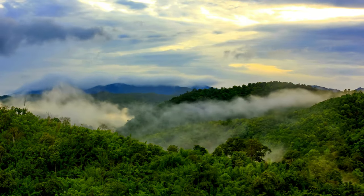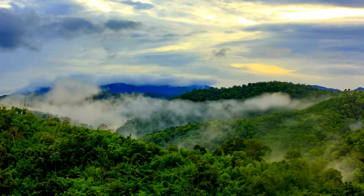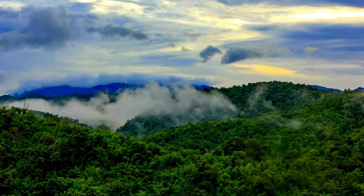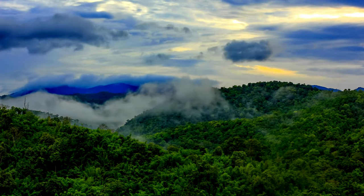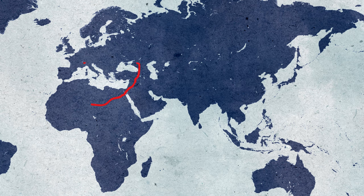The evolutionary narrative of Asian apes suggests that apes originated in Africa during the Late Oligocene and diversified significantly during the Miocene. Coupled with the warm climate of the Middle Miocene, this facilitated the spread of apes to Europe, Central Asia, and South and Southeast Asia by around 12.5 million years ago. Notable fossils from this period include those of Shivapithecus, Lufengpithecus, and Khoratpithecus.